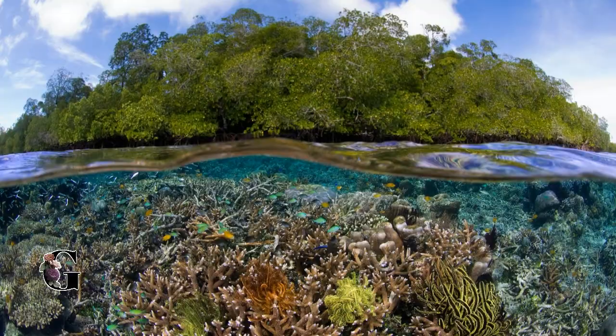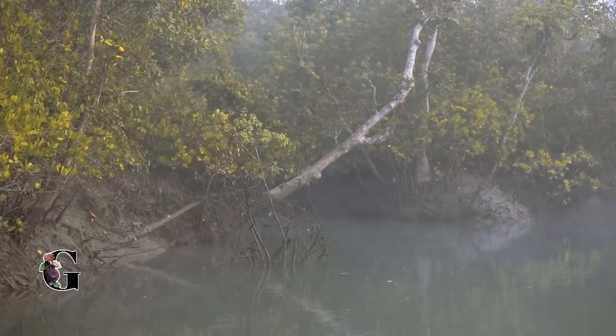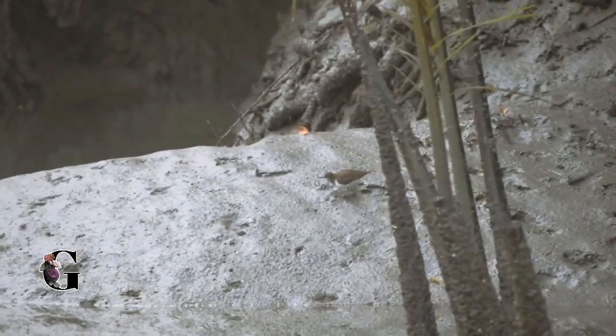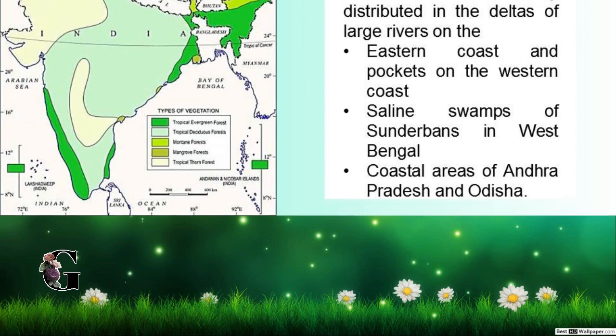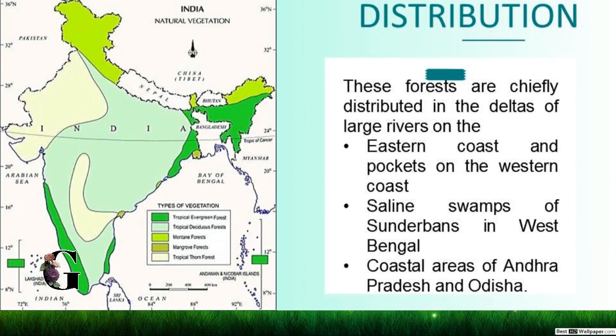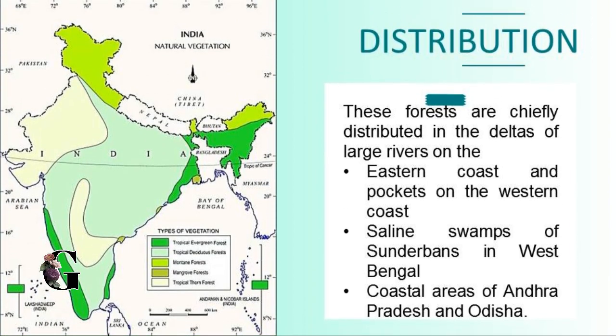The mangroves are also an important source of blue carbon. Coming back to the tidal forest — they were well distributed along the deltas of the Ganga, Mahanadi, Krishna, and Kaveri.